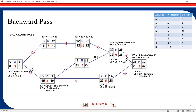For activity G, there are two preceding activities: D and E. We copy the late start of 22 as the late finish for both of these activities. For activity D: LS = 22 − 10 = 12. For activity E: LS = 22 − 3 = 19. This late start of 12 for activity D acts as the late finish for activity B, so LS for B = 12 − 7 = 5. This 5 then acts as the late finish for activity A, and LS for A = 5 − 5 = 0. So activity A can start as late as day 0.